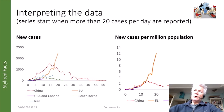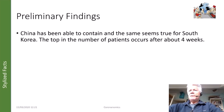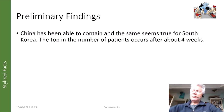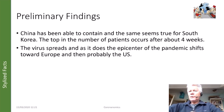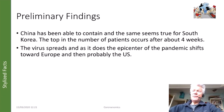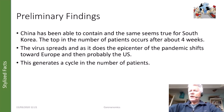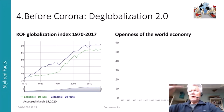Preliminary findings: China and South Korea have been able to contain, with the peak in number of patients occurring after about four weeks. As the virus spreads, the epicenter shifts from China to Europe and then probably to the United States, but may also shift back to China when containment measures are relaxed. This generates a cycle in the number of patients globally, with the clear example shown earlier in the active-cases chart.